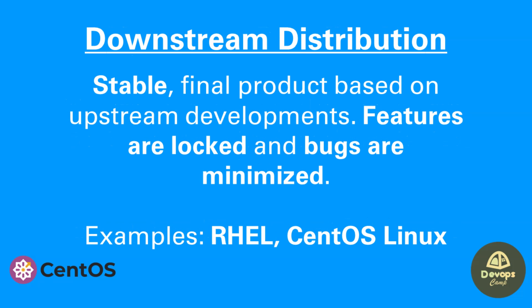Downstream distribution is the final, stable product based on upstream developments. Bugs in downstream distros are less frequent. Red Hat Enterprise Linux and CentOS Linux are examples of downstream distros.